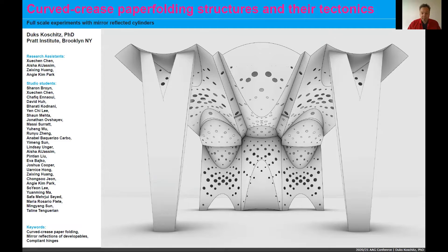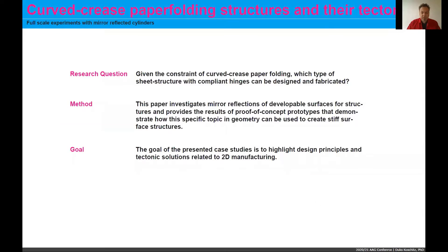The research question for this paper is, given a constraint of curved crease paper folding, which type of sheet structure with compliant hinges can be designed and fabricated? And what we endeavored to do was to create proof-of-concept prototypes.